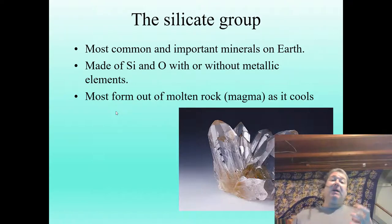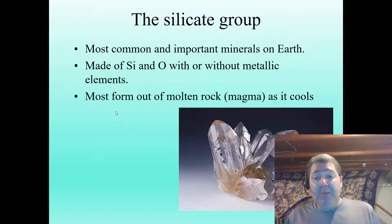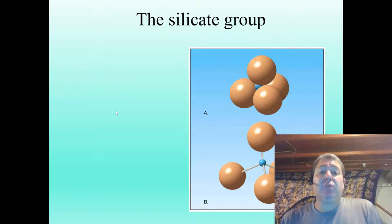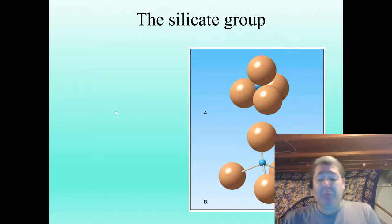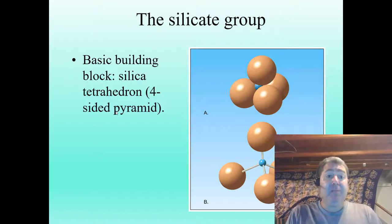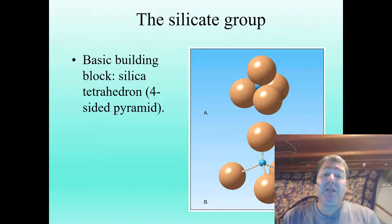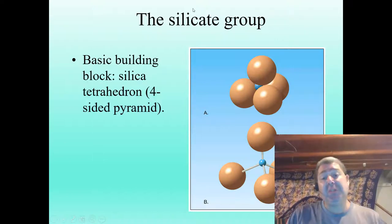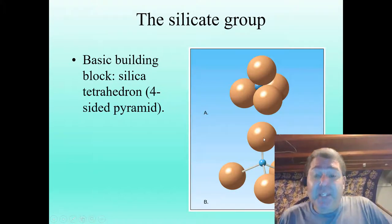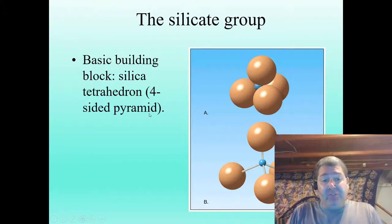It's important to note that the vast majority of silicate minerals form out of molten rock — they crystallize out of magma as it cools. The basic building block of the silicate group is the silica tetrahedron. A tetrahedron is a four-sided pyramid.